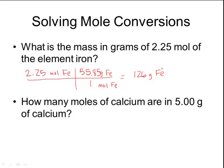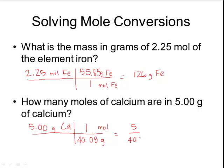I can also do the reverse. How many moles of calcium are in 5 grams of calcium? Write down what's given: 5 grams. Set up a T-chart, transfer grams to the bottom, and convert to moles. The molar mass of calcium is 40.08 g/mol, so one mole of calcium weighs 40.08 grams. Using dimensional analysis: 5 ÷ 40.08 = 0.125 moles of calcium.